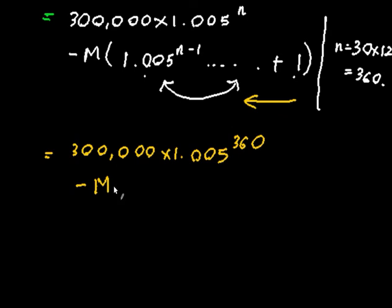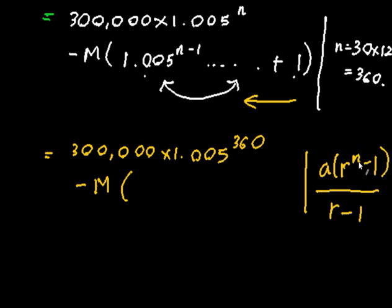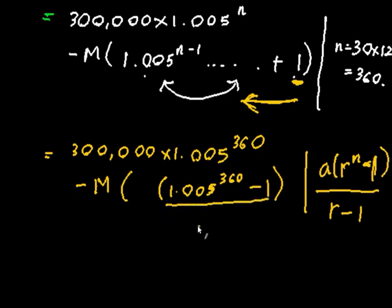So this ends up being 300,000 times 1.005 to the 360 minus M times, now rather than writing all of this, I can say this is simply the sum of the geometric series. And I'll write down the formula on the left hand side: A times R to the N minus 1 all over R minus 1. R in this case, the ratio in my case, is 1.005. N is the number of terms, and because it starts from 1, there's actually going to be 360 terms. So it's minus 1 divided by 0.005, so 1.005 minus 1 will give me 0.005.